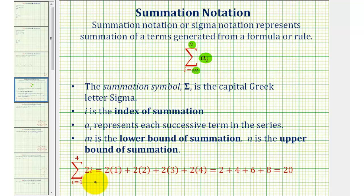Looking at this example at the bottom, two i is the formula that generates the terms that we'll sum. i starts at the value of one, increases by one until it reaches the value of four. So i will take on the values of one, two, three, and four.